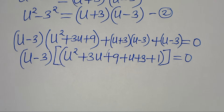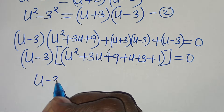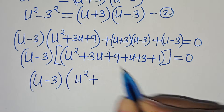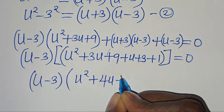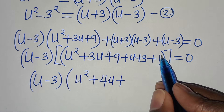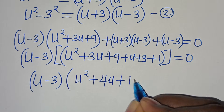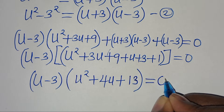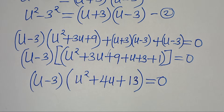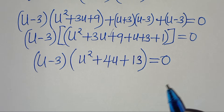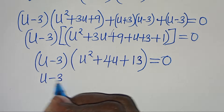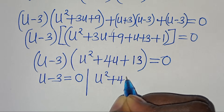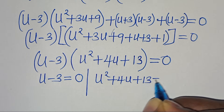Now we have that (u minus 3) is common throughout. Factoring out (u minus 3), we get (u minus 3) multiplied by (u² plus 3u plus 9 plus u plus 3 plus 1), which simplifies to (u minus 3)(u² plus 4u plus 13), this is equal to 0. So either u minus 3 equals 0, or u² plus 4u plus 13 equals 0.